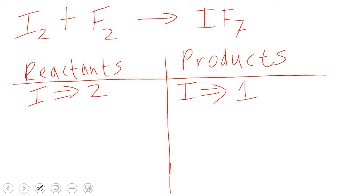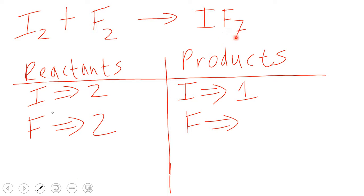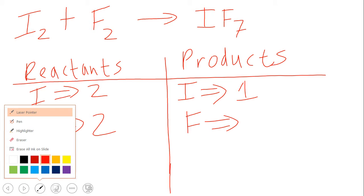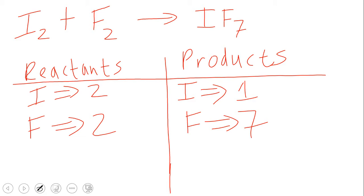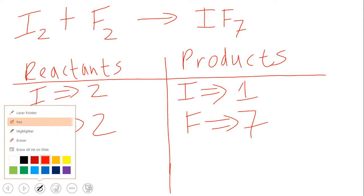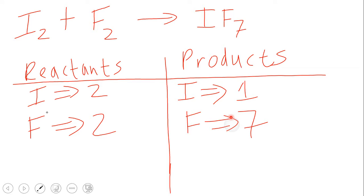That is going to be one. And then F — that is just two. And for F on the other side, that is seven. So here we have a problem. For F on the product side there's seven, and for F on the reactant side it's only two. So how are we going to fix that? We have F seven, and F is two.